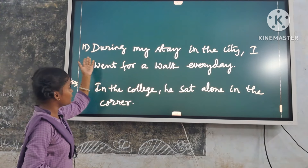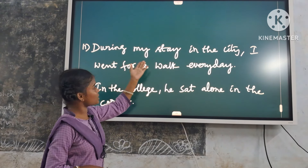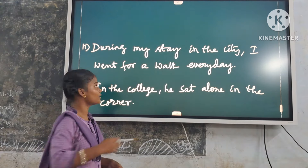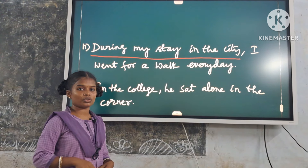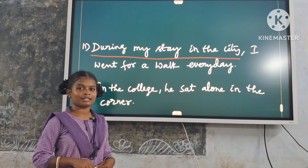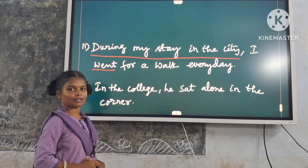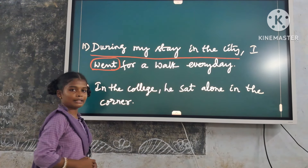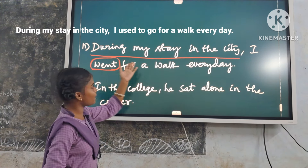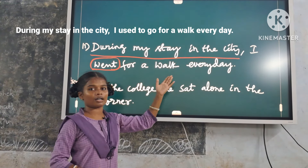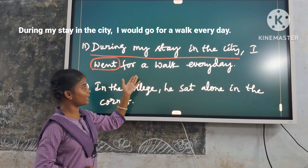Eleventh example: 'During my stay in the city, I went for a walk every day.' Here, 'during my stay in the city' is a time expression. So we use both 'used to' and 'would'. Replace with 'used to go' or 'would go'. Answer: 'During my stay in the city, I used to go for a walk every day.' Or: 'During my stay in the city, I would go for a walk every day.'